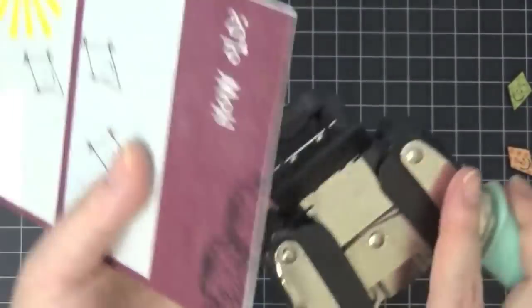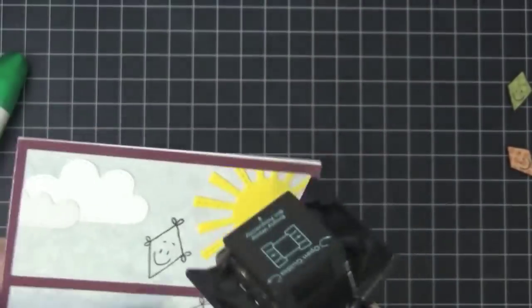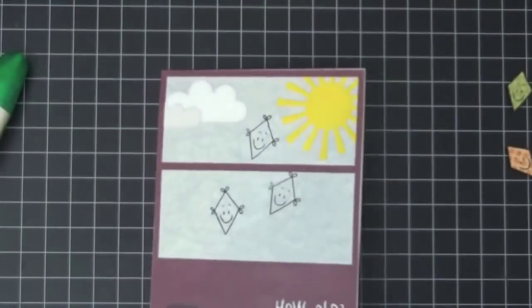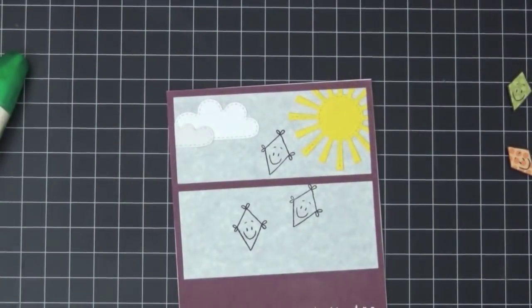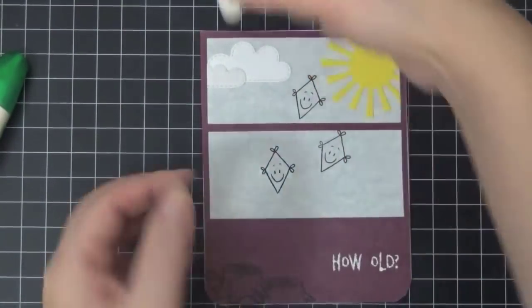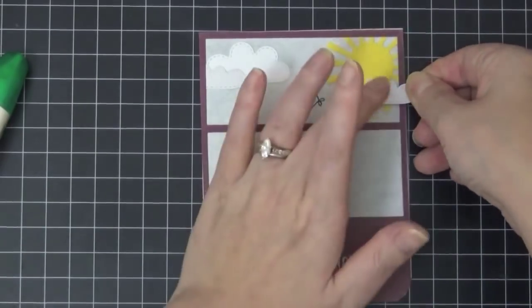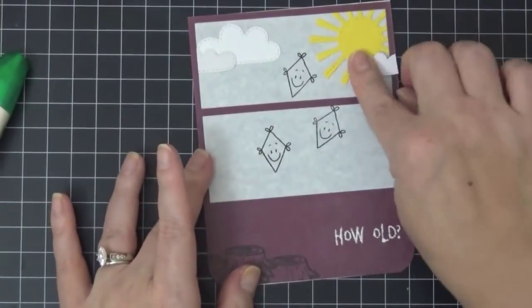And I want it to round the bottom corners, so I'm using the We Are Memory Keepers Corner Chomper. I use the half an inch. And I'm going to go ahead and put my cloud right there on top. Cut off the excess.